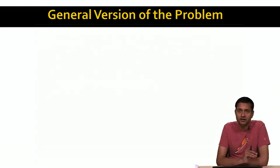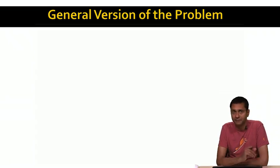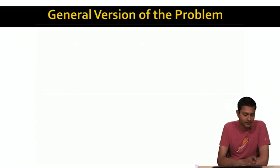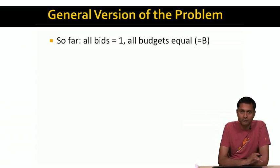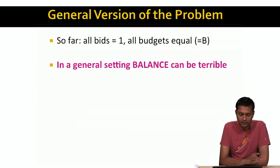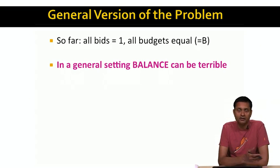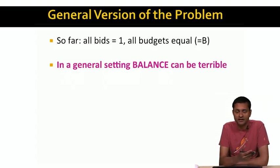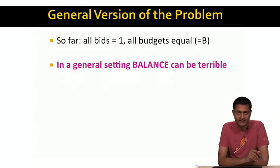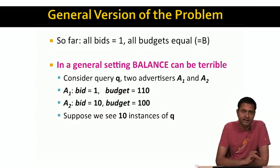We've looked at a very simplified version of the AdWords problem where all advertisers had the same budget B and all ads had equal expected revenue of 1. In the general version of the problem, each advertiser has a different budget, each advertiser has a different bid for each ad, and each ad has a different expected click-through rate yielding a different expected revenue. In this general setting, the balance algorithm as described so far can actually be quite terrible.